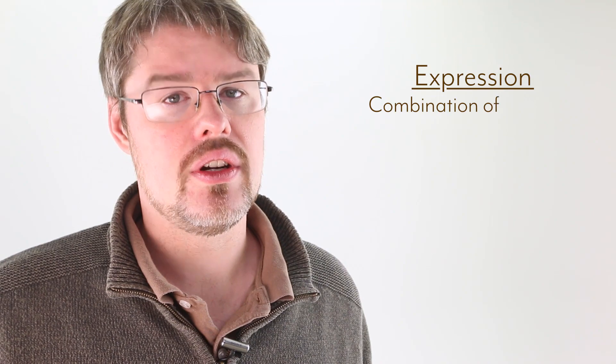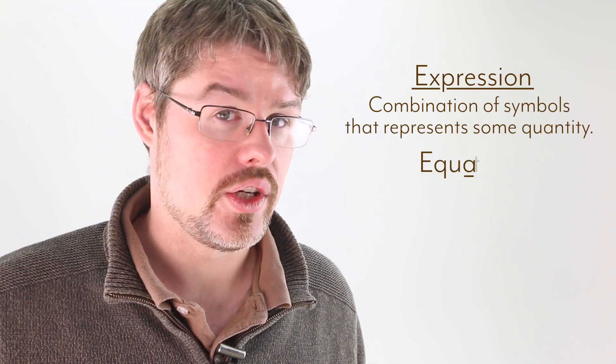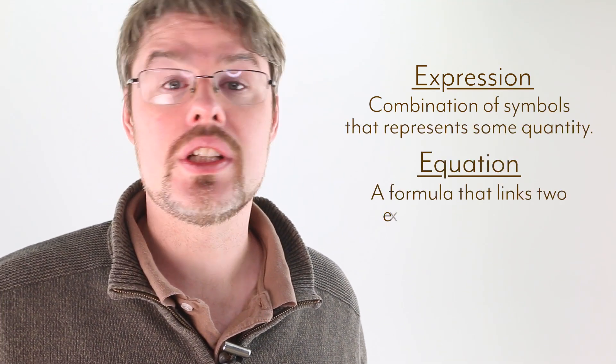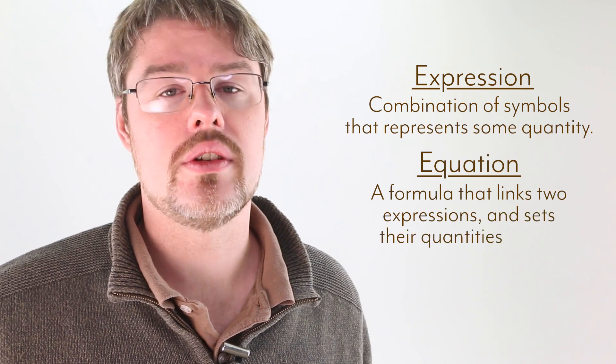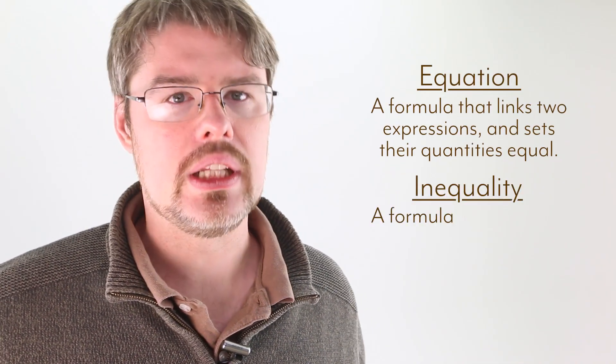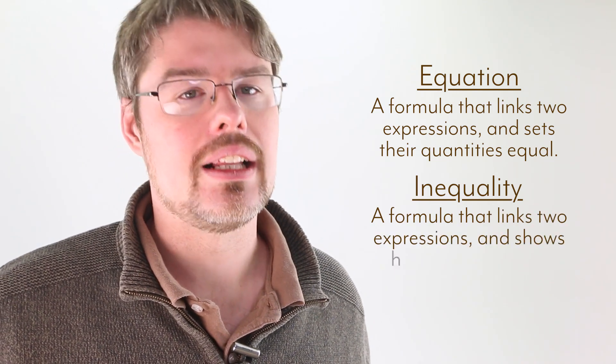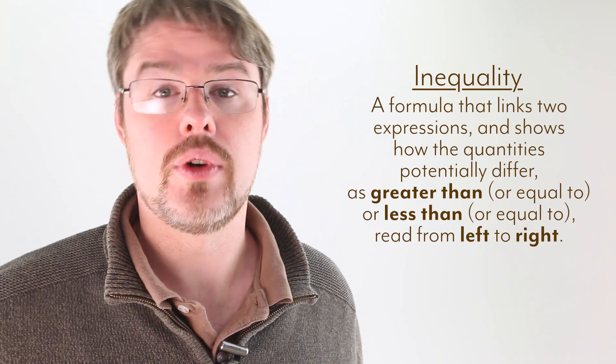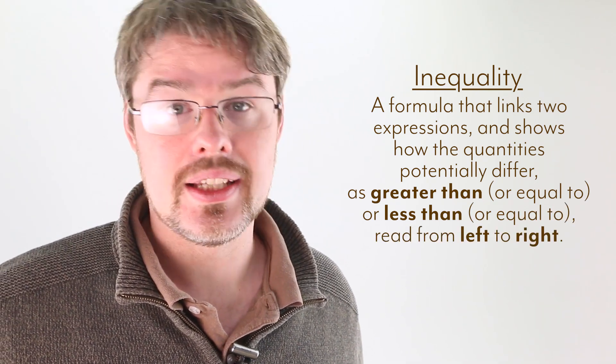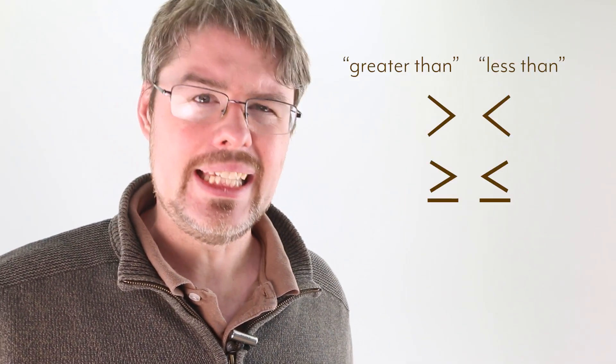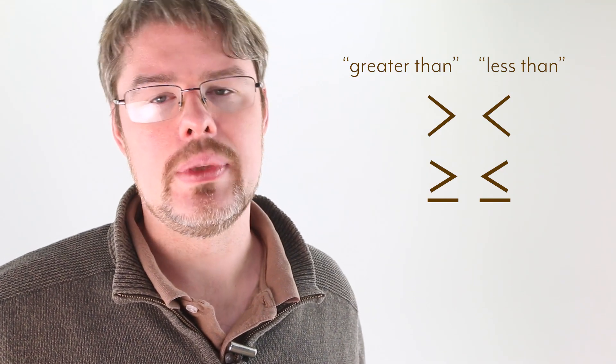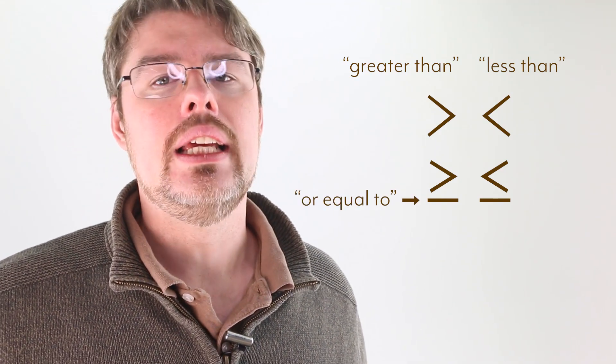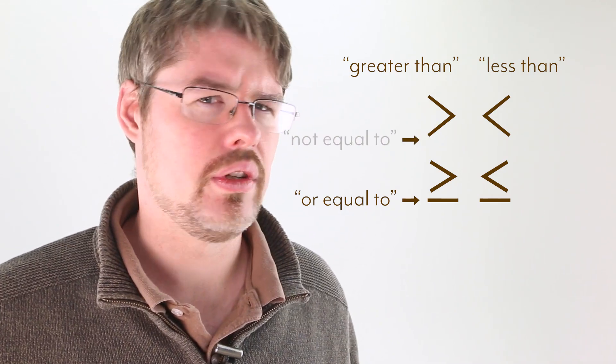In this episode, we have introduced a bunch of new ideas. An expression is a combination of symbols that represents some quantity. An equation is a formula that links two expressions and claims that their quantities are equal. An inequality is a formula that links to expressions and claims that the quantities differ somehow, either as a greater than or less than sort of relationship, read from left to right. There are four basic inequality symbols. With the little equals bar underneath, the symbols mean or equal to. Without the bar, it means not equal to, though we usually don't say that part.